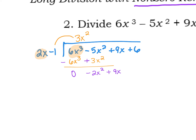Now I want to decide what I have to multiply 2x by in order to get negative 2x squared — and that would be negative x. If I multiply negative x times 2x, I get negative 2x squared. If I multiply negative x times negative 1, I get plus x. Once again, I'm switching signs using another color — that becomes plus, and this becomes a negative x. Adding straight down: that does add to 0. Here I get 9x minus x, so I'm left with 8x. Then I'm bringing down this 6.